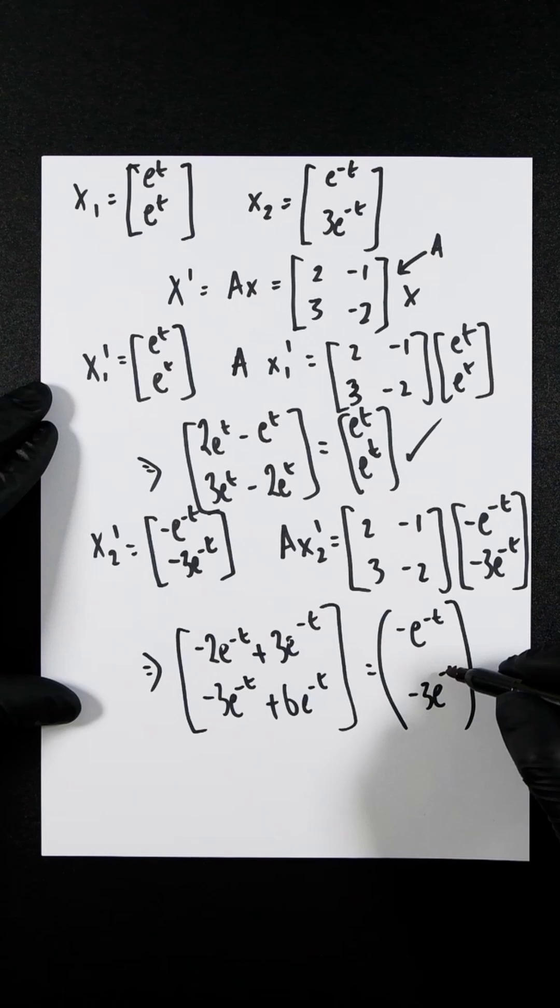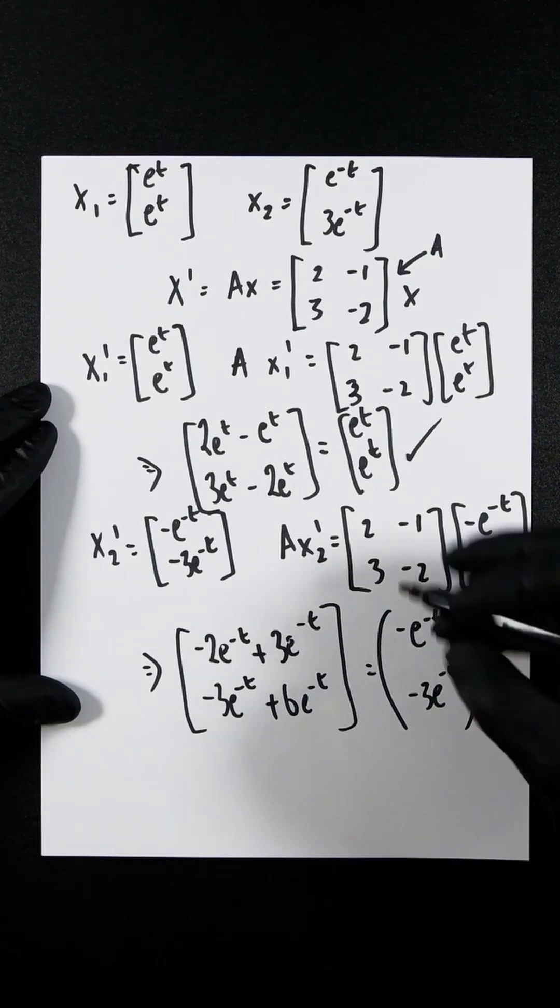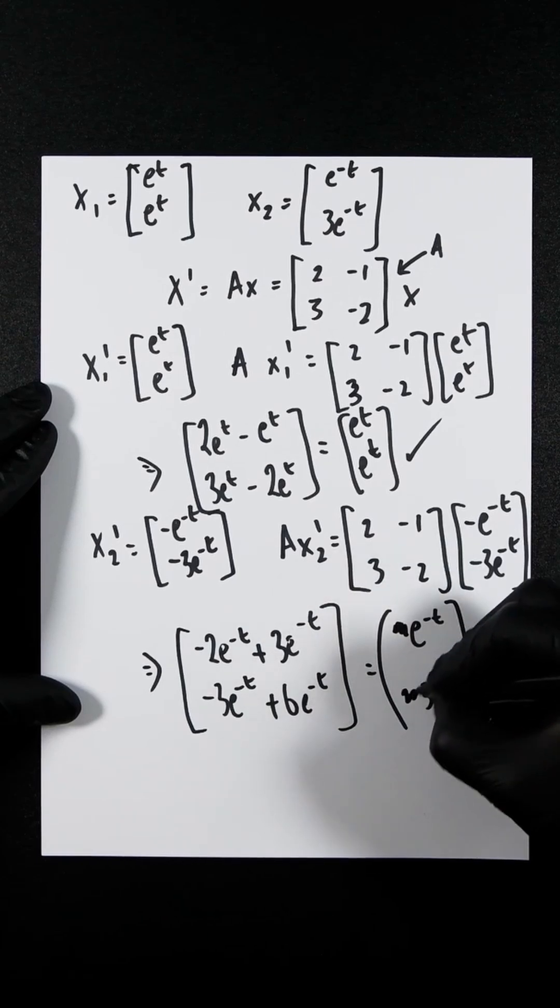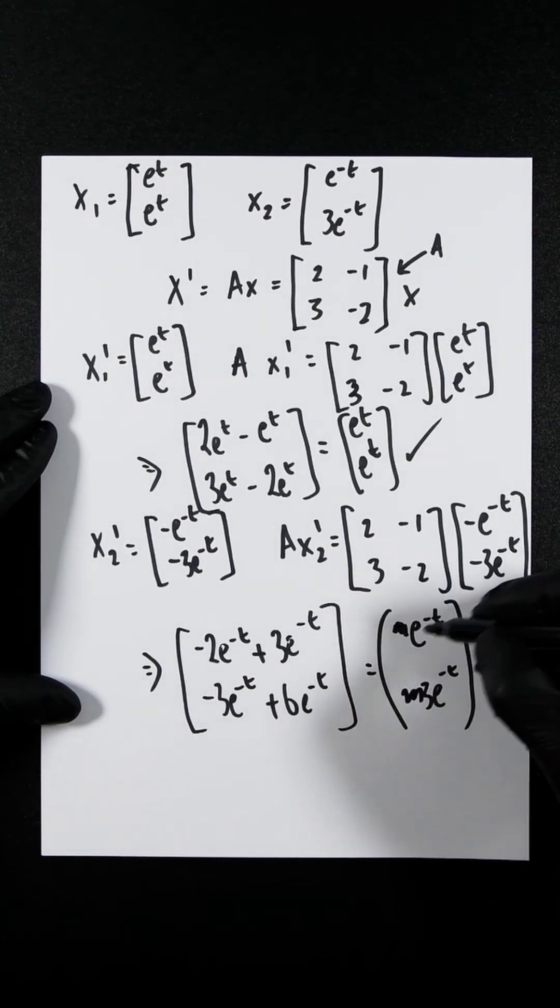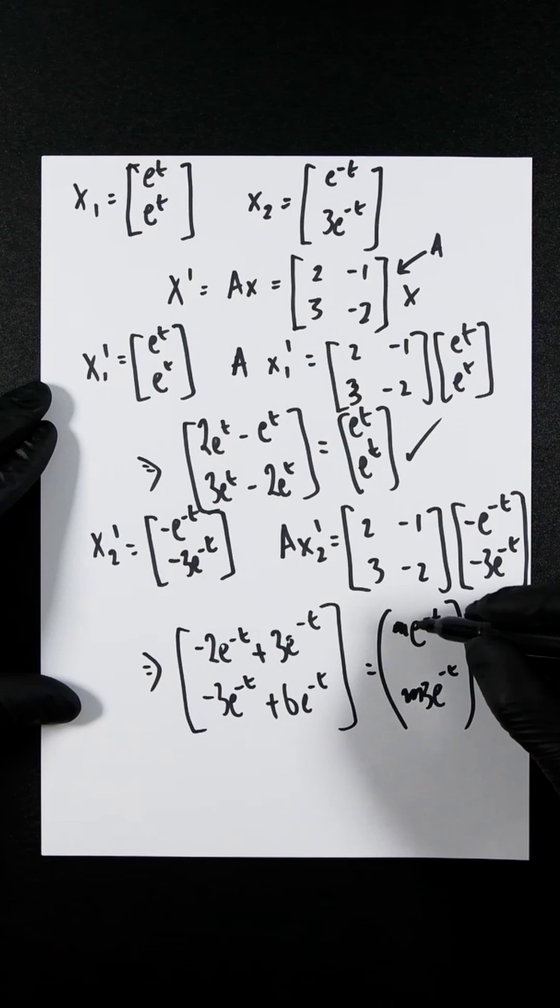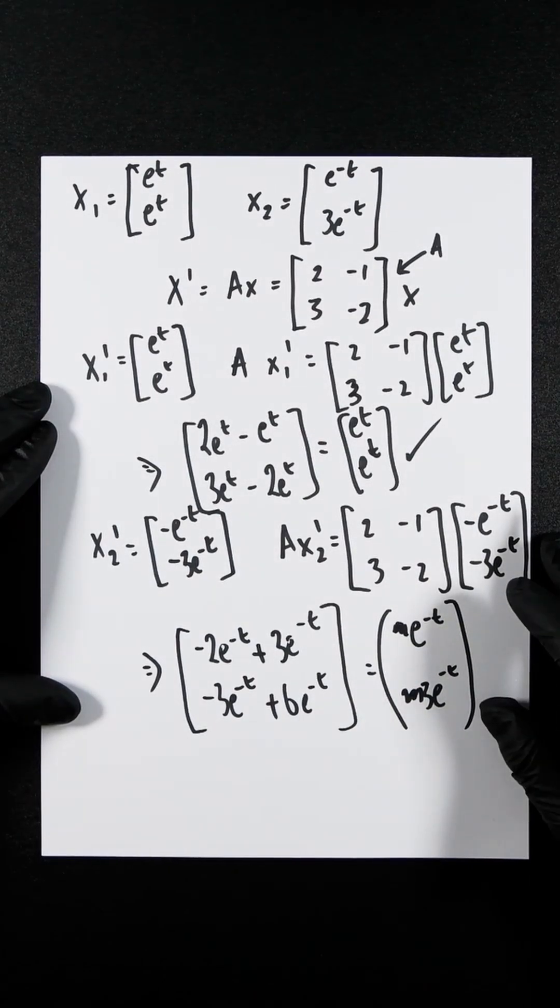And guess what? That happens to be exactly the same. Wait, hold on. Actually, it should just be, what am I doing? Minus 2 plus 3. That's e to the minus t. That's correct. Now, that is exactly the same as that.